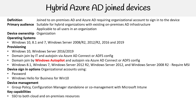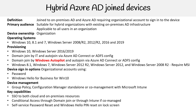For key capabilities, we have SSO to both cloud and on-premise resources, conditional access through domain join or through Intune if co-managed, self-service password reset, Windows Hello PIN reset on the lock screen, and enterprise state roaming across devices.